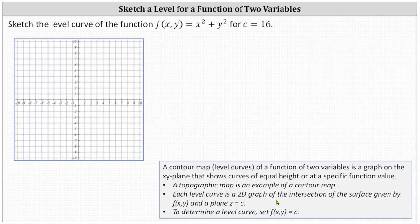Each level curve is a 2D graph of the intersection of the surface given by f(x, y) and the plane z equals c where c is a constant. Notice for our example we have c equals 16.